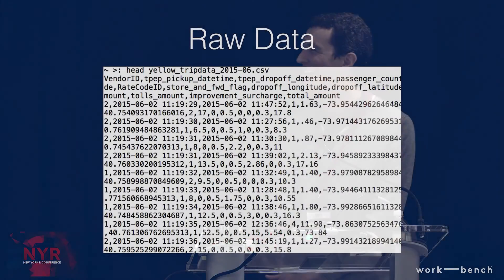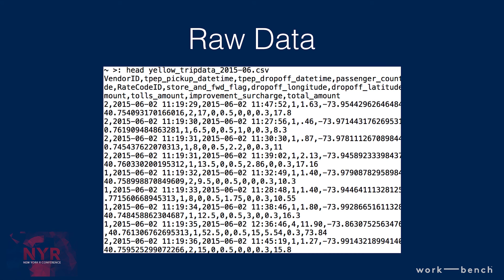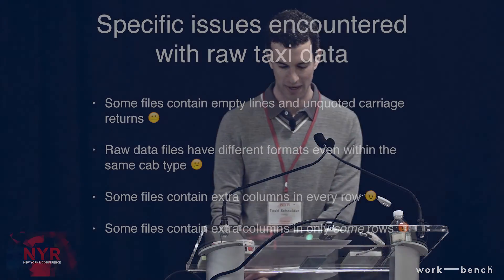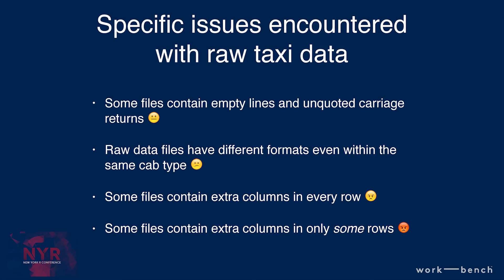Here's a picture of a CSV file — it's got some numbers, some commas, some headers. Some specific issues I encountered with the taxi data, which was pretty messy, along with the corresponding emoji for how annoying I found each problem. The winner goes to the last one: some files had a header row saying there are 18 columns in each row, and then most rows had 18 columns, but some had 16 or 20 with no indication of what the extra or missing columns were. Pretty frustrating.